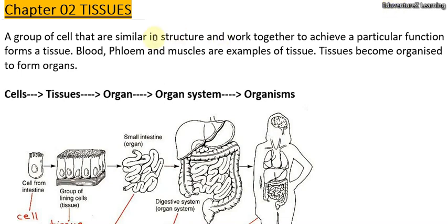Hello students, welcome to our channel Adjuventures Learning. Today we are going to start with the second chapter of Standard 9, included in the NCERT books — Tissues. Tissues are a group of cells that are similar in structure and work together to achieve a particular function.